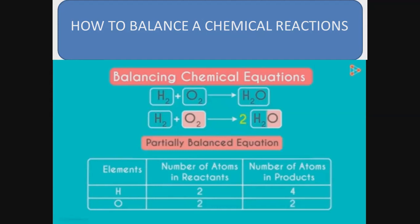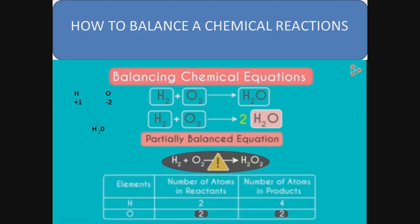The first step is to treat each formula as fixed — we cannot change atoms inside a formula, but we can multiply the whole formula by a coefficient. We place a 2 in front of H2O on the product side to balance oxygen, giving 2H2O. This makes oxygen balanced, but now the hydrogen count on the product side increases to 4. This gives us a partially balanced equation.